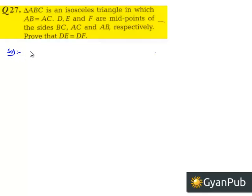Moving on to the solution. It is given that ABC is an isosceles triangle, so let us draw an isosceles triangle.